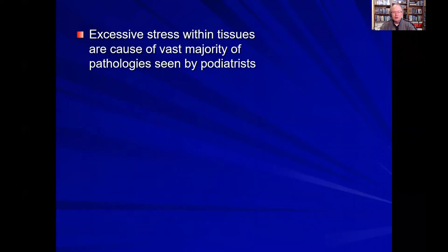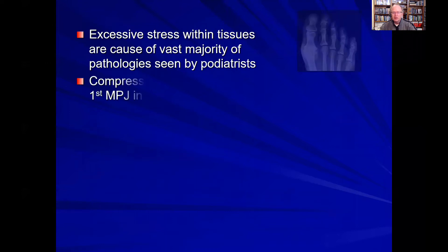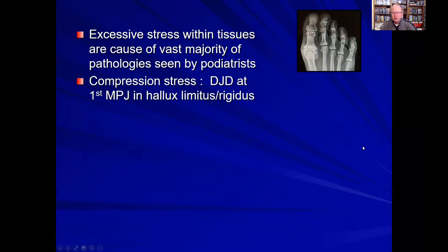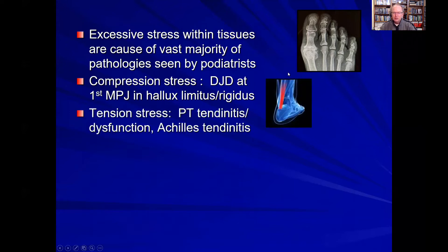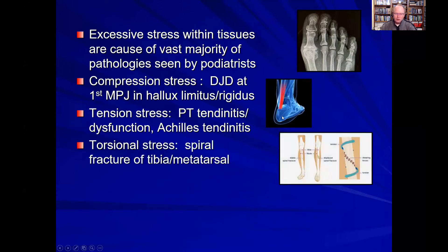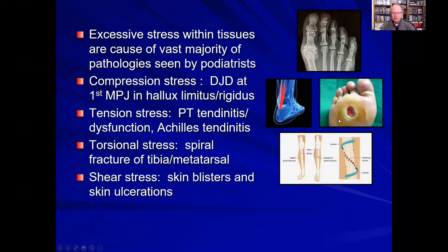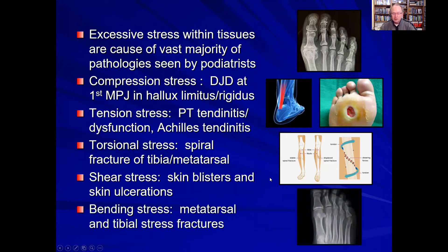Understanding stress, strain, and tissue stress are important to us as podiatrists, since excessive stress is the main cause of the mechanically related disorders we see every day in our clinics. Examples: compression stress can cause degenerative joint disease at the dorsal aspect of the first metatarsophalangeal joint in hallux limitus and hallux rigidus. Tension stress is a common cause of posterior tibial and Achilles tendonitis. Torsional stress can cause spiral fractures of the tibia or metatarsals. Shear stress can cause skin blisters or ulcerations of the plantar skin. And bending stress is a common cause of long bone fractures such as in the metatarsals and the tibia.